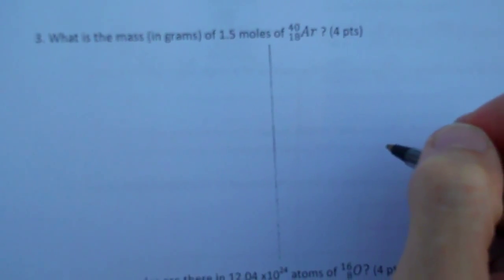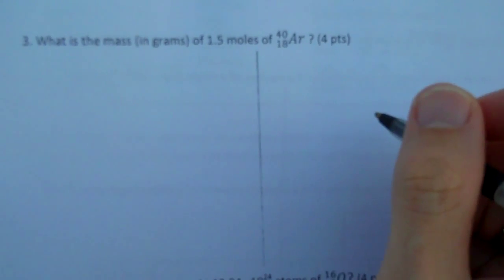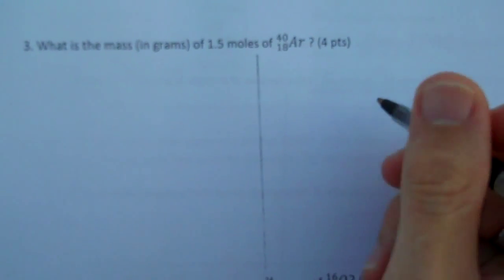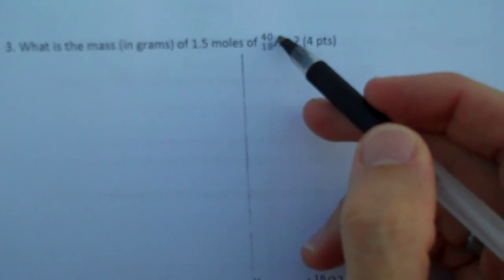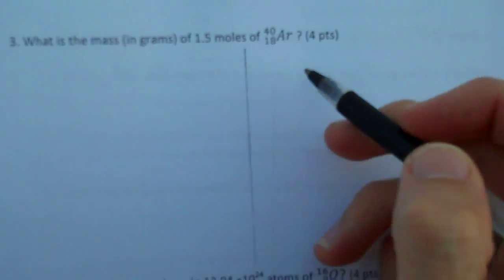So my question is, what is the mass in grams of 1.5 moles of argon, with an A of 40 and a Z of 18?